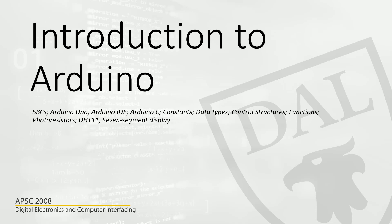In Module 2, we talked about some basic electronic components, and we also introduced semiconductor components. We started off with diodes, and we talked about transistors — how we can use transistors as an amplifier as well as a switch.